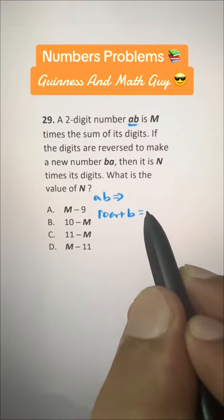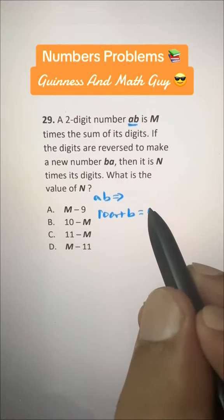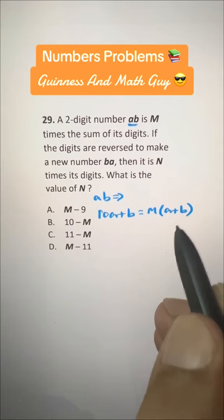And the question says it's M times the sum of its digits. So, M times sum is A plus B, right? Sum of digits.